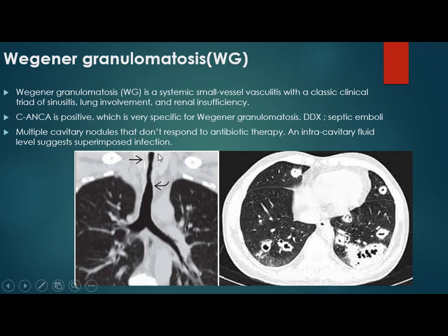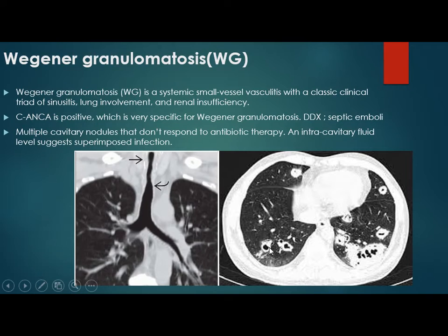The differential for Wegener's granulomatosis includes septic emboli. Wegener's shows multiple cavitary nodules that do not respond to antibiotics, with intra-cavity fluid levels and variable nodule sizes. Septic emboli are smaller and more uniform; in both, a feeding vessel sign can be seen. In septic emboli, there is no sinusitis. Wegener's involves the trachea causing stenosis and renal failure, and sometimes involves the bronchi causing lobar or segmental collapse.